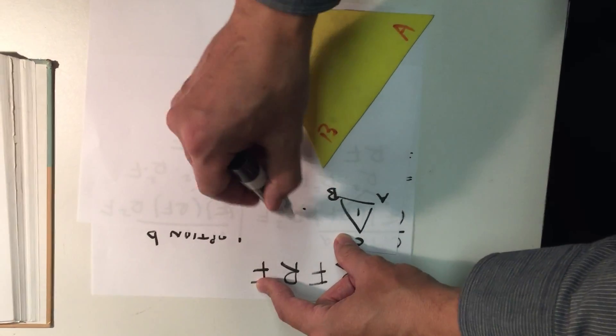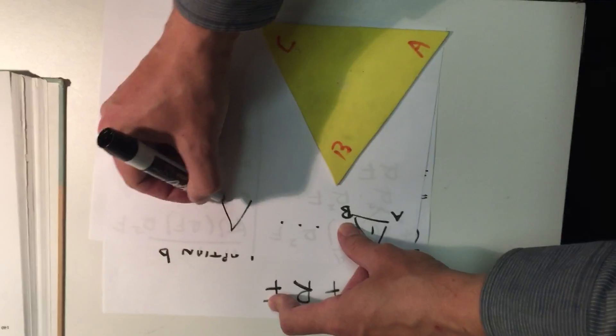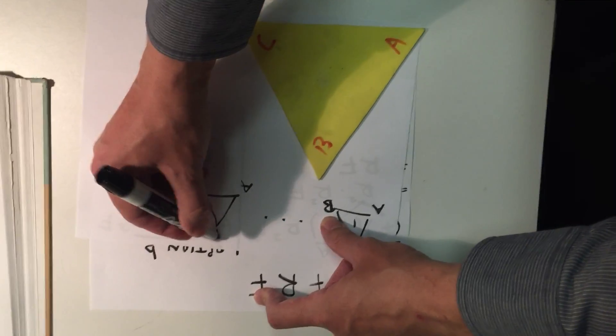So what I end up with is A, C, B. Now the question is, which one of these different arrangements is this? I have A, C, B.